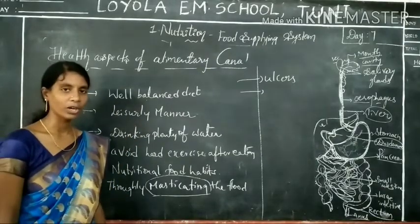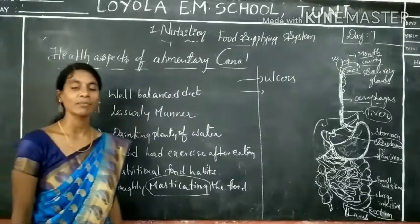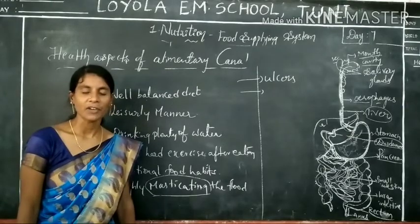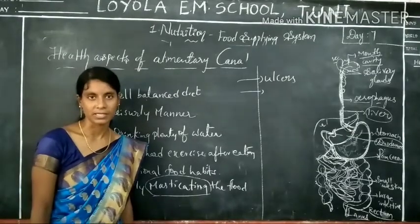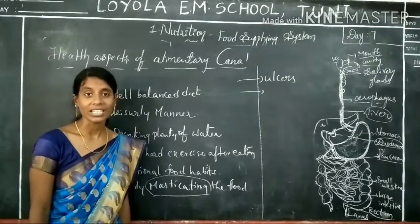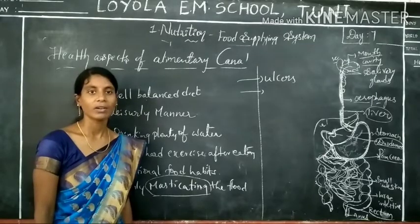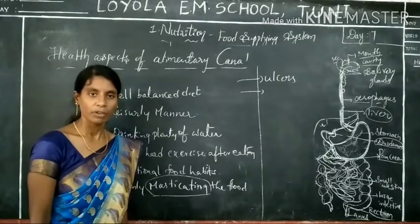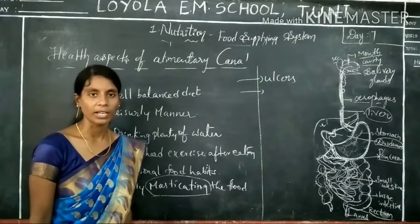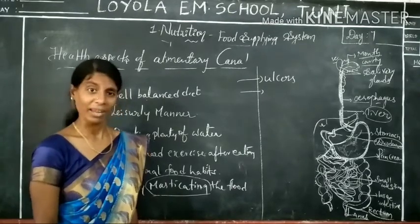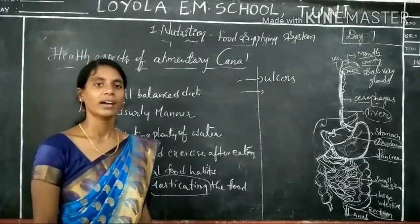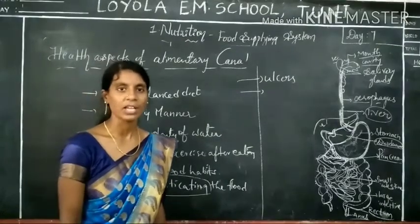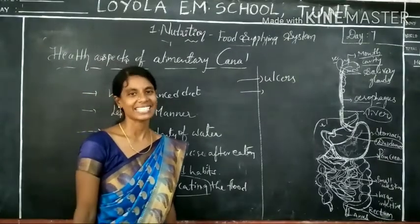Up to now, we have seen an overview of the human digestive system — about digestion, enzymes, and what steps to follow to avoid ulcers and alimentary canal problems. In the next class, we will see diseases related to nutrition — how nutrition deficiency occurs, what vitamins are needed by the body, and which vitamins are required in larger amounts.